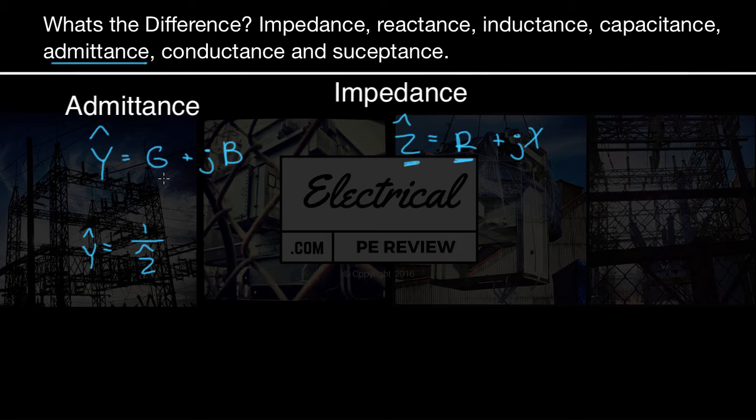That's it for our explanation on the difference between all the ANCE terms: impedance, reactance, inductance, capacitance, admittance, susceptance, and all that good stuff. For more free articles, PE exam practice problems, or to enroll in our online review course for the electrical power PE exam, come check us out at www.electricalpereview.com. We'll see you soon.